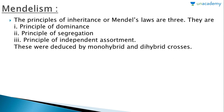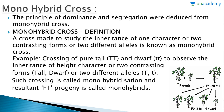Mendel's laws, also called the principles of inheritance, are three: the principle of dominance, the principle of segregation, and the principle of independent assortment. These were deduced from monohybrid and dihybrid crosses. The principle of dominance and segregation were deduced from the monohybrid cross.